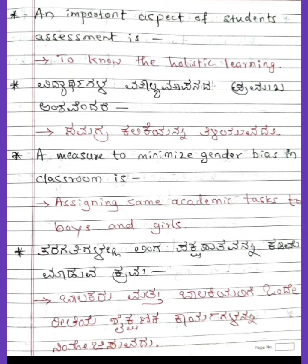An important aspect of students' assessment is to know the holistic learning of the students. A measure to minimize gender bias in the classroom is assigning some academic tasks equally to boys and girls.